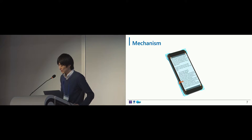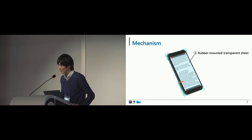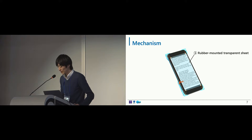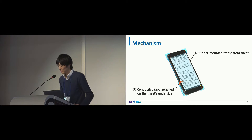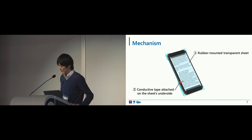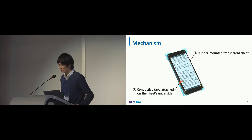The main idea of SEARSEAT consists of two features. First, we install a rubber-mounted transparent seat overlaid on the touch surface that can be physically moved to a certain extent in two dimensions when shear force is applied. Second, the seat has a tiny conductive tape on its underside, so the seat's movement can be detected as touch input by the touch panel when it is grounded by the user's hand. This mechanism achieves shear force detection instead of using pressure sensors.